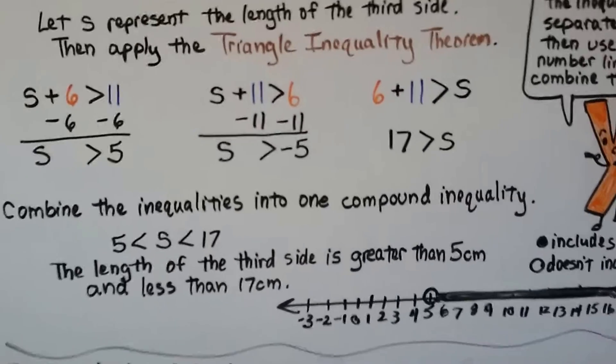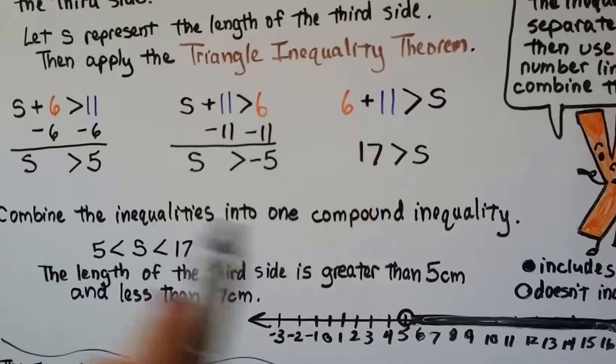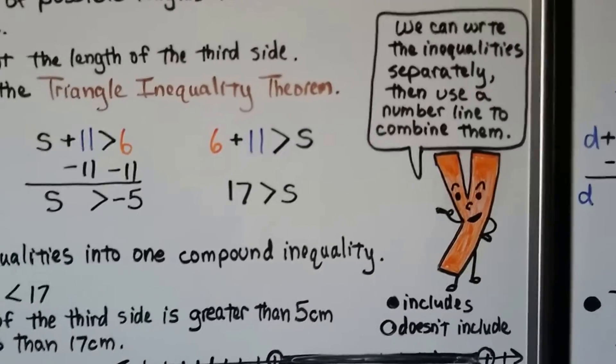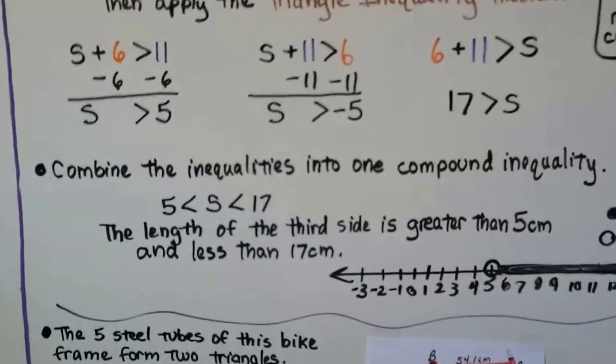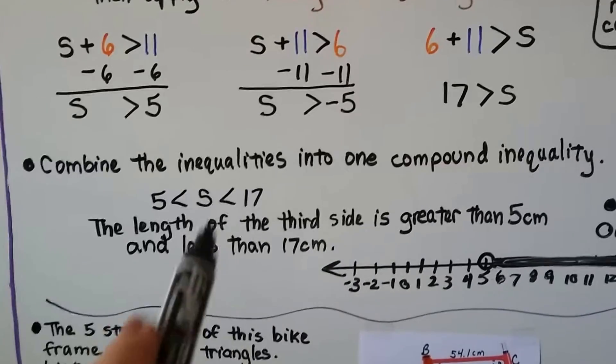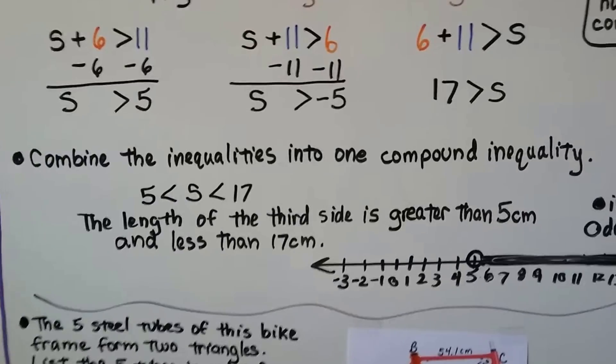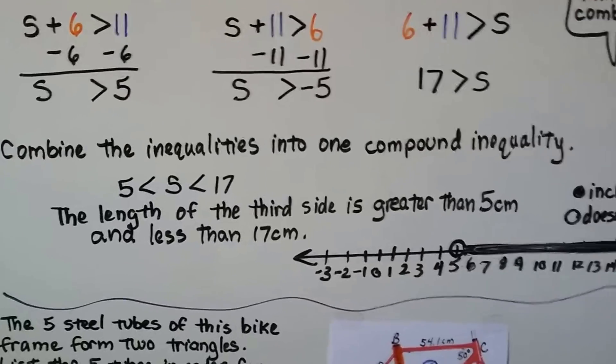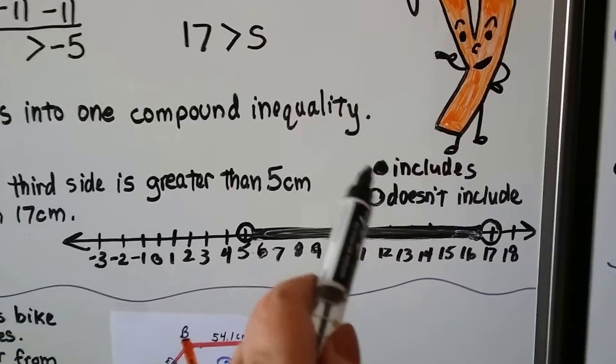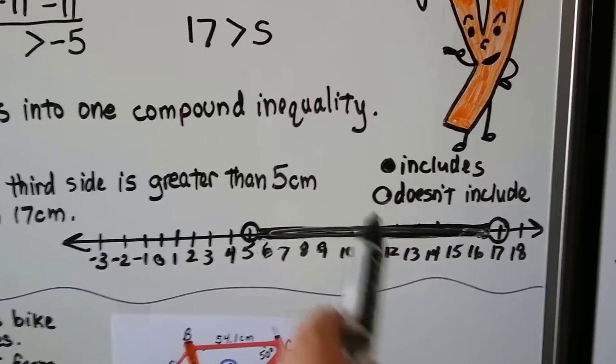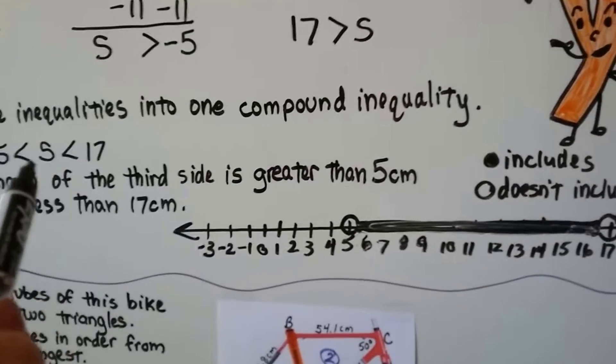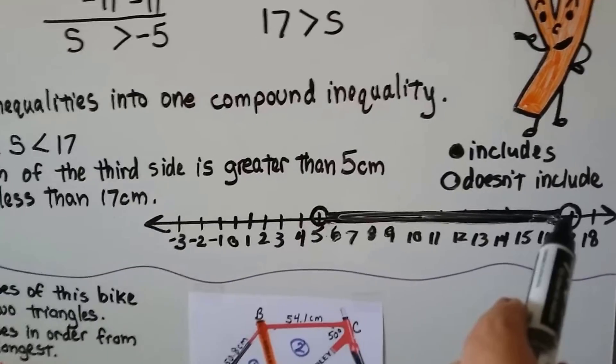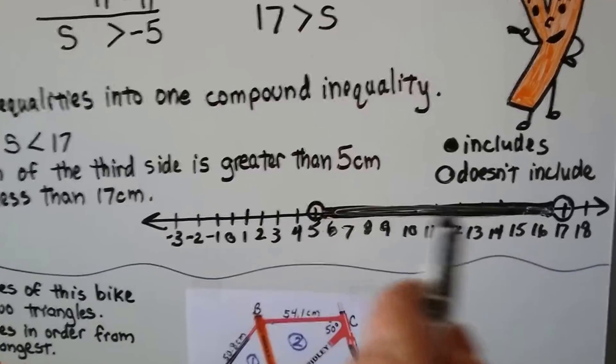If you have trouble turning these inequalities into a compound inequality, you can write the inequality separately and then use a number line to combine them. When we have two inequality signs, we start reading in the middle: S is greater than 5 and less than 17. The length of the third side is greater than 5 centimeters and less than 17 centimeters. If you graph this, a filled in dot means it includes the number. If it's an open dot, that means it doesn't include it. Because S is greater than 5, it doesn't include 5, so it's open. And it's less than 17, so it can't be 17, so that's open. Here's the range of what it could be.